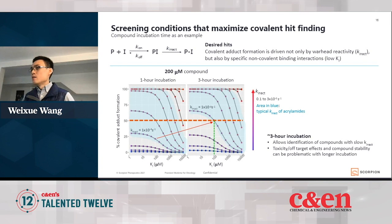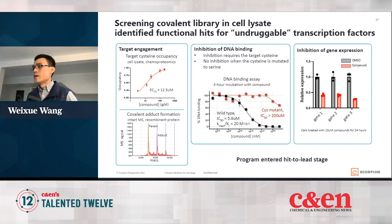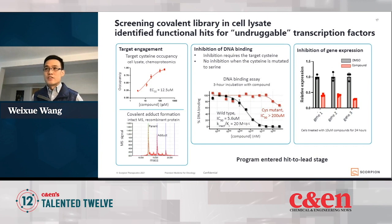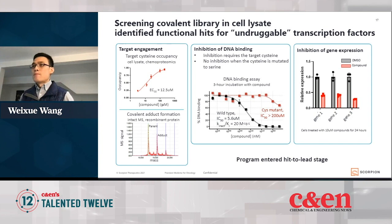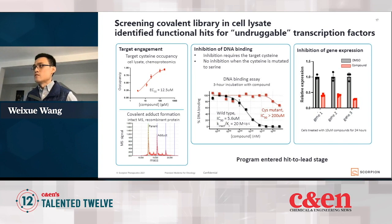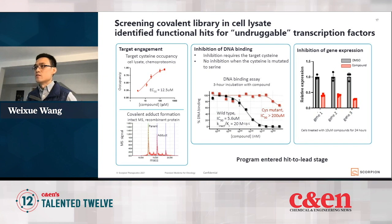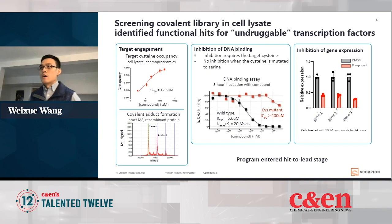By screening the covalent library in live cells or lysate under optimized conditions, we are able to find functional hits for undruggable transcription factors. Here's one example. We are able to show covalent engagement at the target cysteine by mass spec-based approach. In the middle panel, we show that the compound can inhibit the DNA binding function of this transcription factor. Importantly, we show that the inhibition depends on the target cysteine — if we mutate that cysteine to serine or alanine, the compound is no longer able to bind and you see a significant loss of inhibition. Finally on the right, we show that the compound can inhibit downstream gene expression. With our strategy, we're able to find functional hits for several undruggable targets.